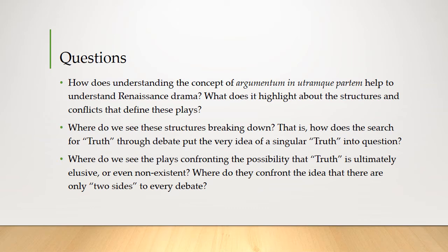A few questions before our first pause. How does understanding argumentum in utremque partum — knowing this was part of their educational philosophy and practice — help us understand how Renaissance drama works? What does it highlight about the structures and conflicts that define these plays? And where do we see those structures breaking down? How does the search for truth through debate put the very idea of a singular truth into question? What's the contradiction there, and how do we see it occurring within the plays themselves as they try to understand and solve the conflicts that arise? Where do we see the plays confronting the possibility that truth is ultimately elusive or even non-existent?